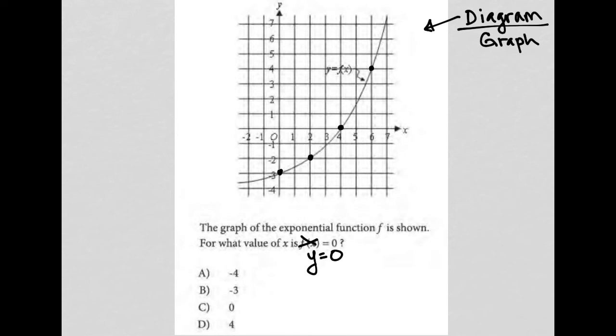Well, y equaling 0 would be the x-intercept, right? So here actually on the x-axis, the x value that causes the x value that corresponds with y equaling 0 on this graph is 4. So our answer here is choice D.